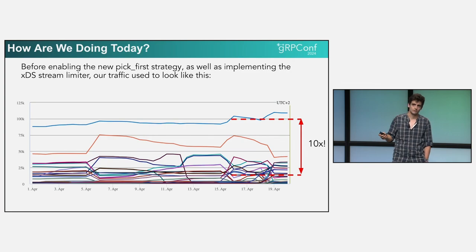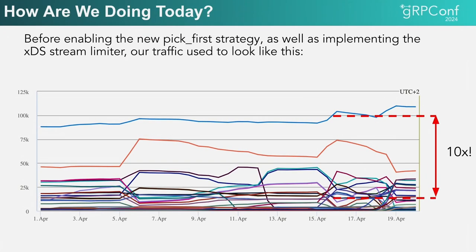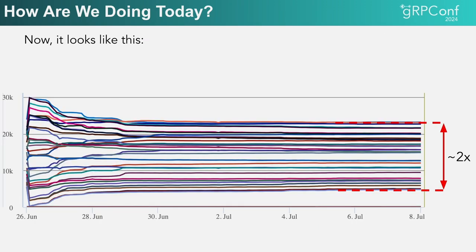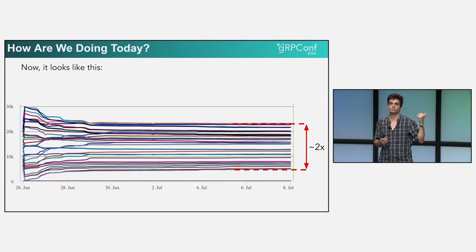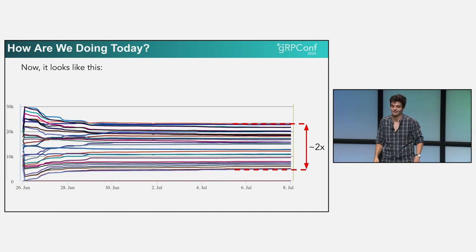Where are we at now? Before, some hosts were taking 10 times the traffic and others were sitting idle. Now the spread is significantly tighter, and it's getting tighter pretty much every day as applications progress. The custom listener code with the ban list is going to stay in because we still want a hard limit on how many resources a single host uses. But things are looking significantly better.